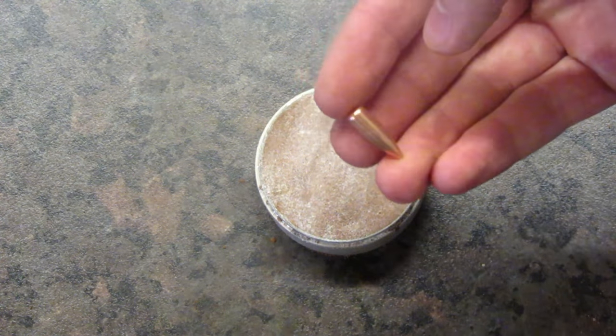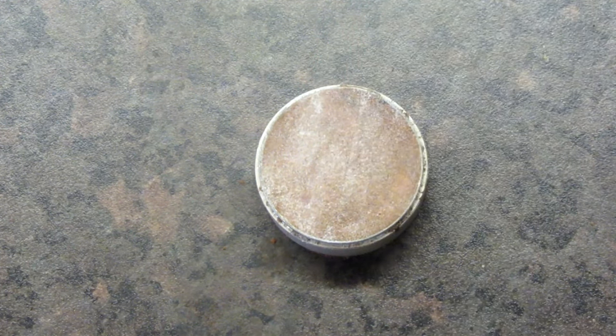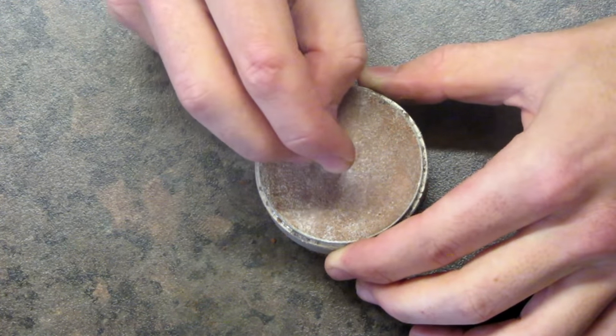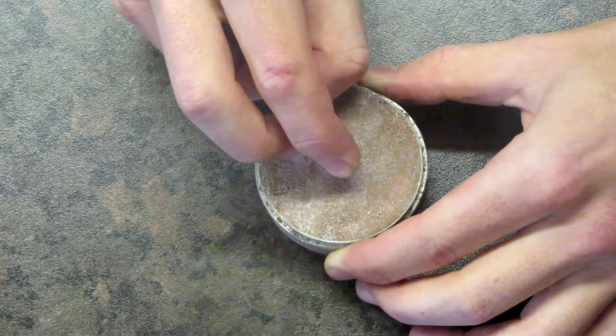The first step is to make an identical copy of the copper round but in silver. This is done by pressing the original copper round into some compacted green sand.